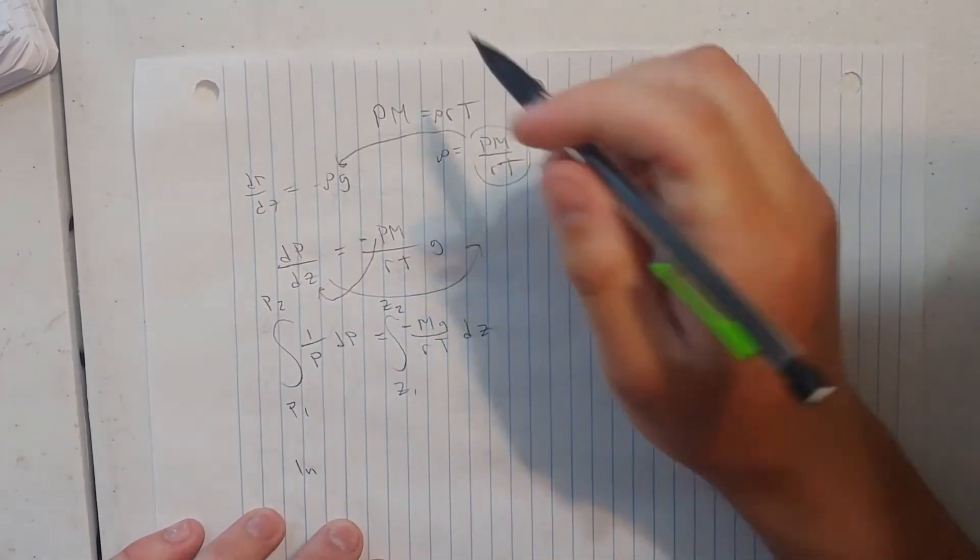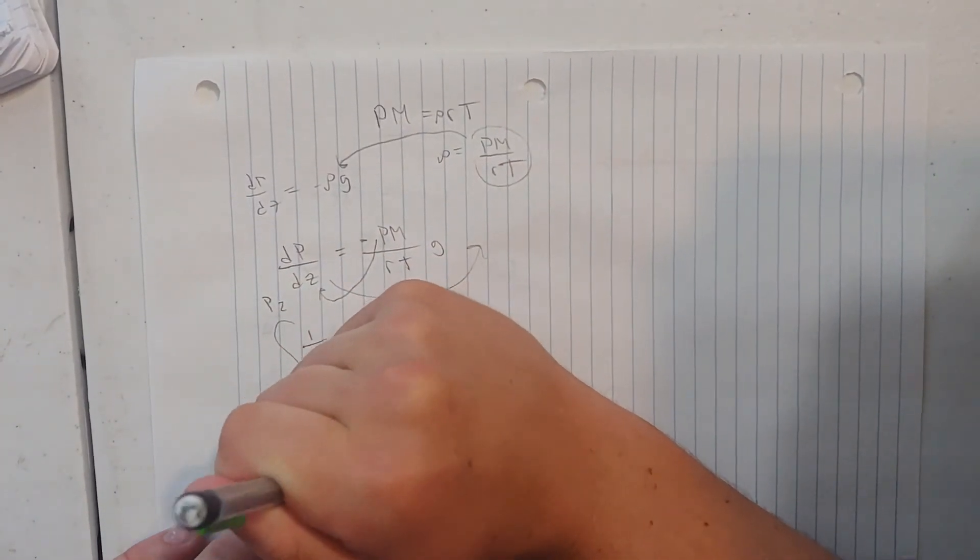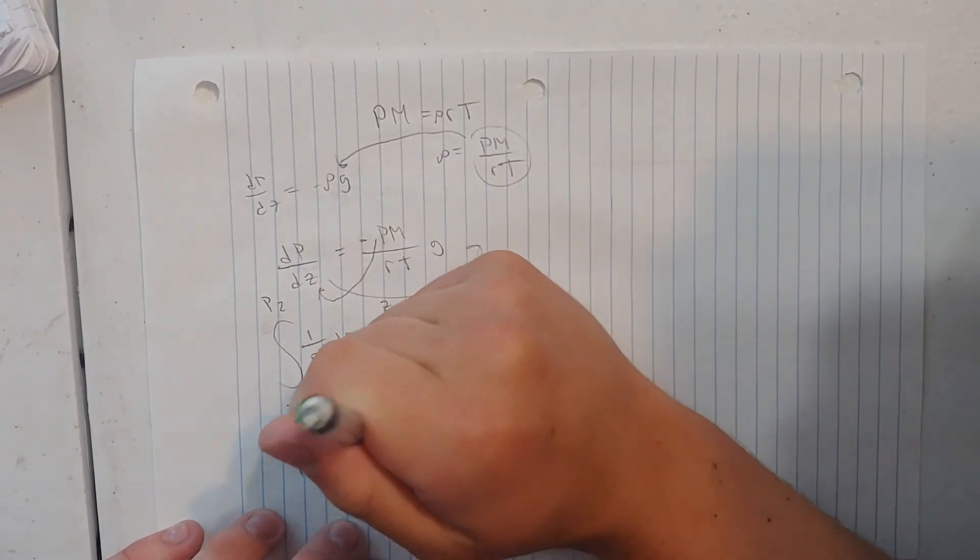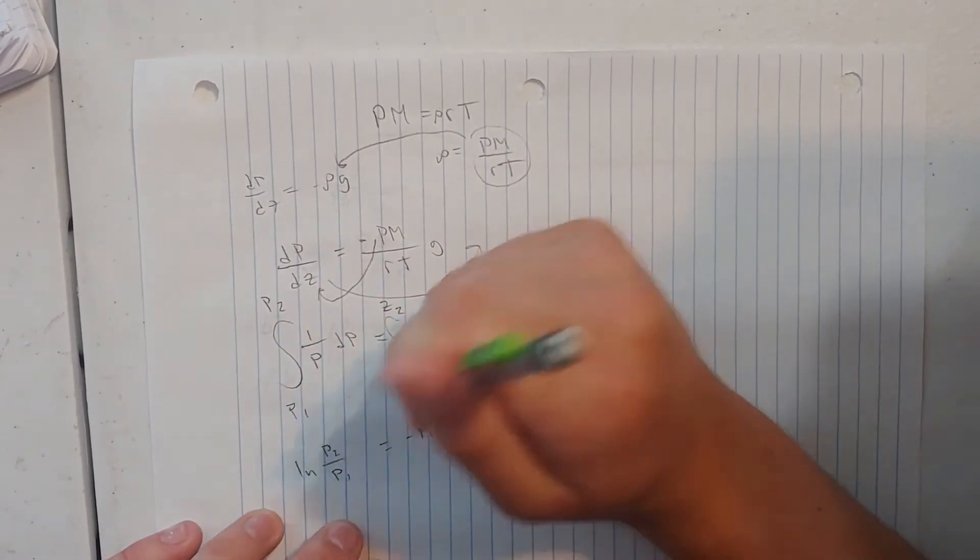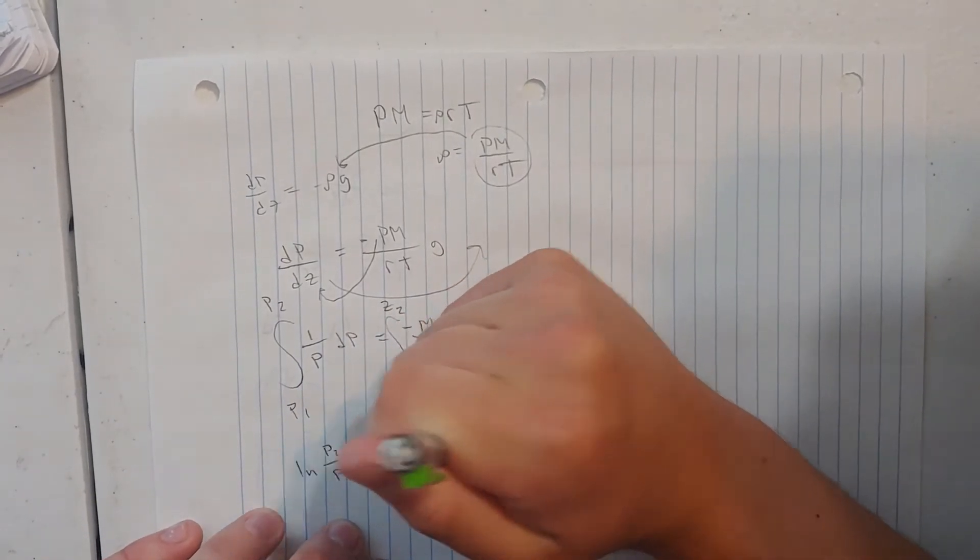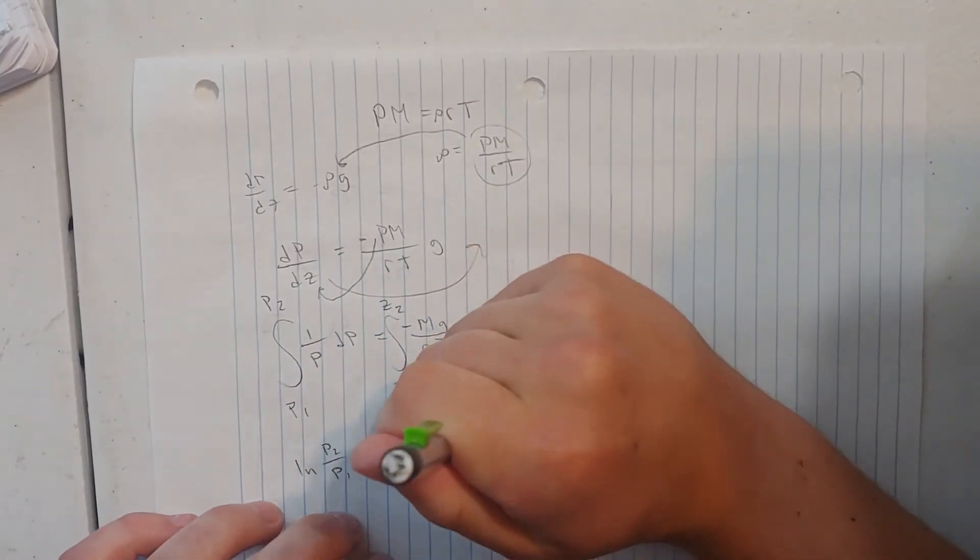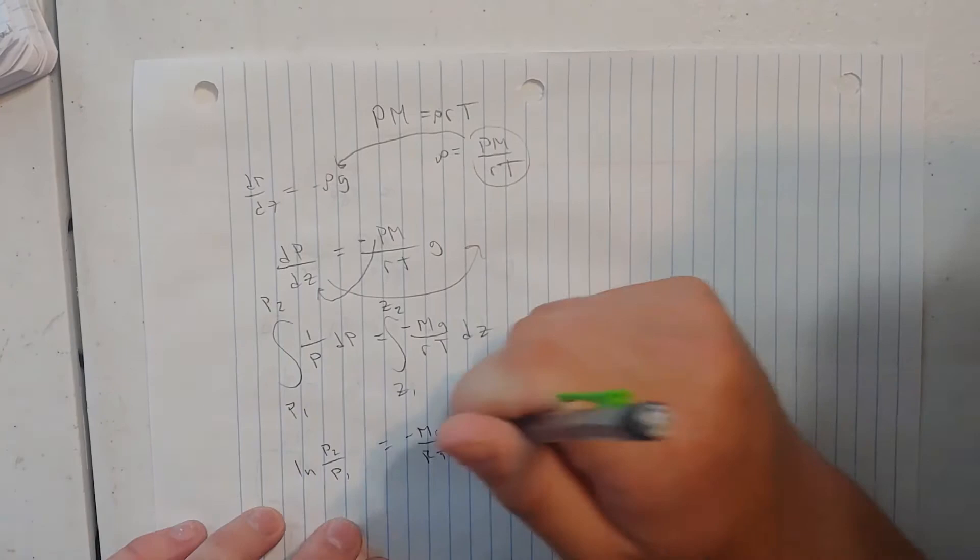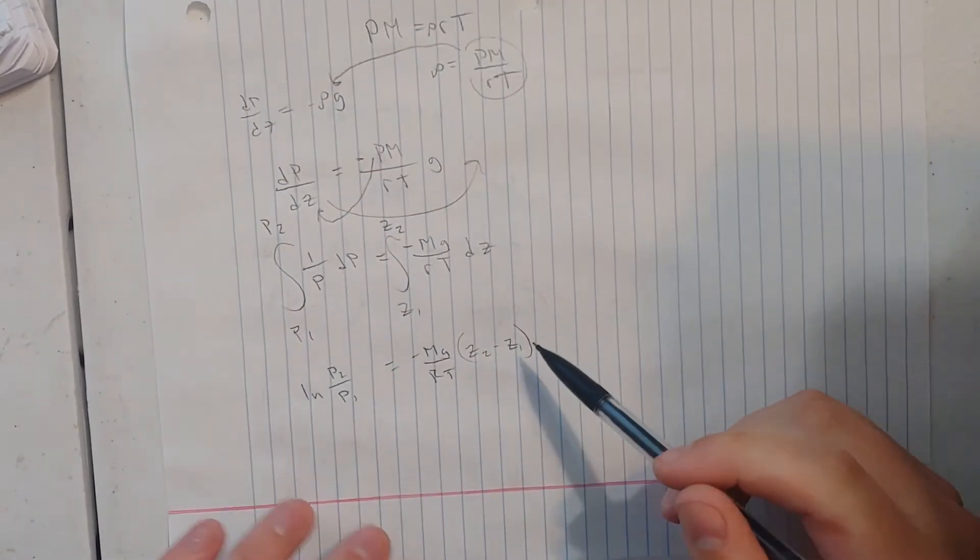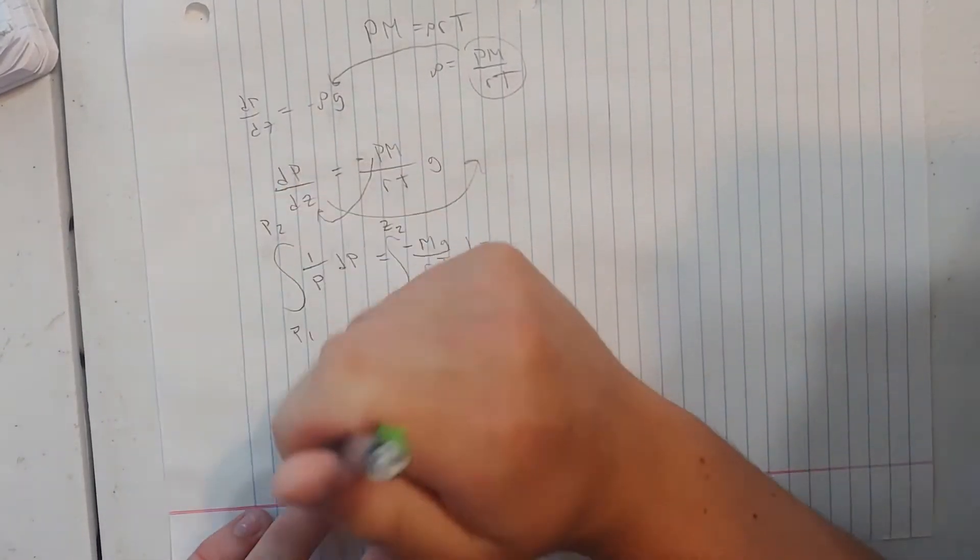So once you integrate this, you're going to get the natural log of p2 over p1 equals the opposite of mg over the gas constant times T times your change in altitude, which is z2 minus z1.